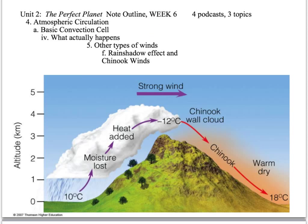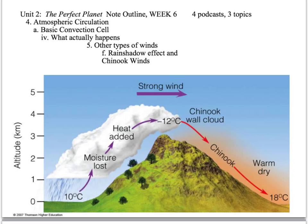The rain shadow effect and Chinook winds: if you've got air blowing from left to right and there's a mountain, the air contains humidity and moisture. As it rises, you're going to hit the dew point — the point at which water vapor becomes liquid water and it rains or snows. As the air rises over the mountain, it drops all of its precipitation and humidity. When it clears the mountain, it starts warming up again and is dry. So you get a desert climate on the downwind side and vegetation on the upwind side.